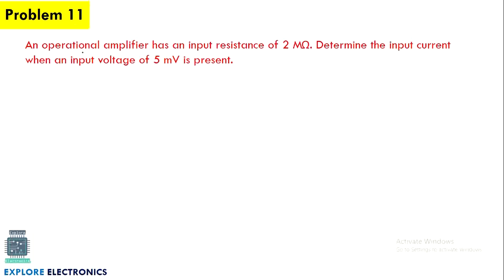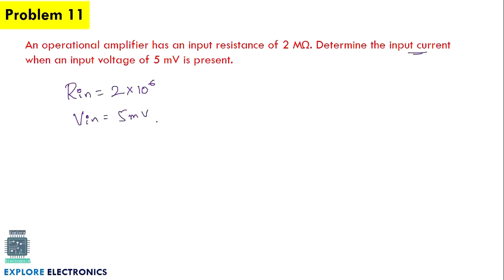The next problem: an operational amplifier has an input resistance Rin of 2 megaohms (2×10⁶ Ω) and an input voltage Vin of 5 millivolts. We need to determine the input current. Using I = V/R, the input current is Vin divided by Rin.